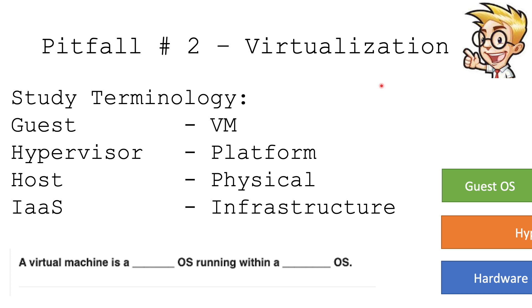Think of a guest as a virtual machine — that's the actual virtual software that's running. Think of a hypervisor as a platform; examples could be VirtualBox, VMware, or Hyper-V by Windows Server. A host is a physical component, the actual hardware that has the VM on it. Be very careful with acronyms, especially related to cloud-based services. One that threw me off guard was Infrastructure as a Service. Knowing the difference between Software as a Service and Infrastructure as a Service is going to really help you on the A-plus examination.